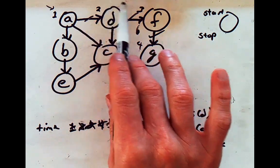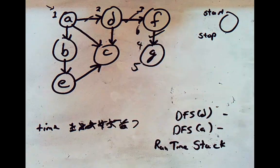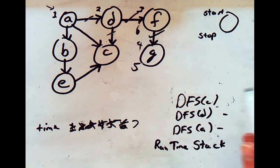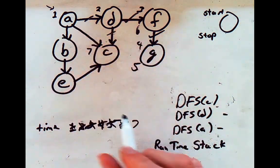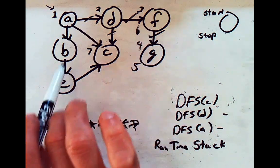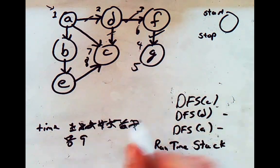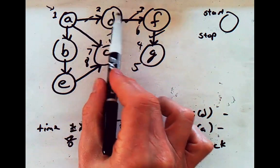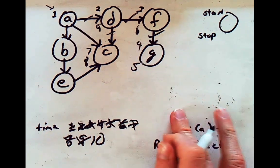Now we've backtracked to D. We continue around and find the next outgoing link to C. We recursively call DFS at C — marking the start time at seven and incrementing to eight. C has no outgoing edges, so we note the stop time and increment the time. Recursive processing of C is completely done. We pick up again at D — all outgoing edges have been processed. We note D's stop time as nine, increase to ten, and remove D from the stack.